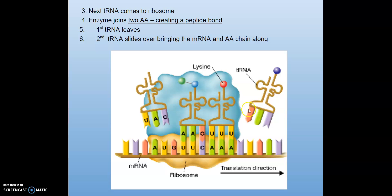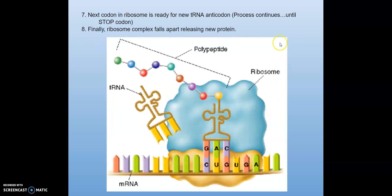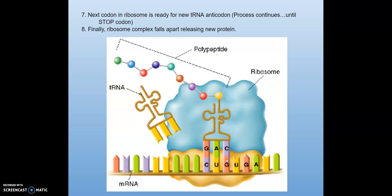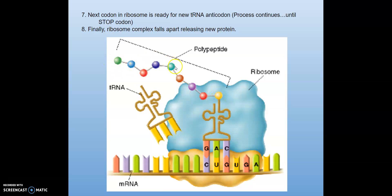That was the third step: the tRNA comes into the ribosome, and an enzyme joins the two amino acids, creating a peptide bond between them. The tRNA leaves, and then the next tRNA comes in to add on the additional amino acid. The next codon in the ribosome is ready for a new tRNA molecule, and the process continues until you hit a stop codon — a codon on the mRNA that tells the sequence to stop creating the protein. After that, the ribosome complex falls apart and releases the new protein, so that polypeptide chain becomes that protein.